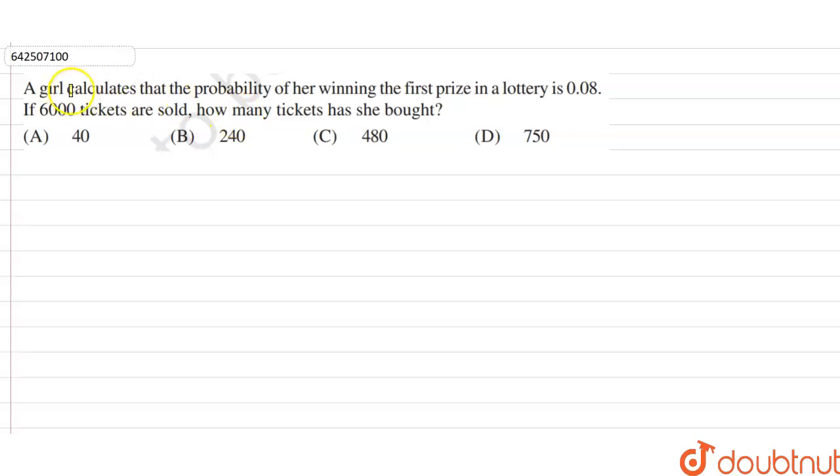Hi students, the question is: a girl calculates that the probability of her winning the first prize in a lottery is 0.08. If 6,000 tickets are sold, how many tickets has she bought?